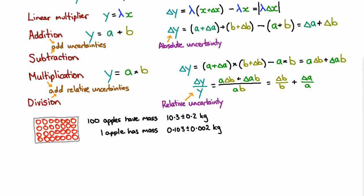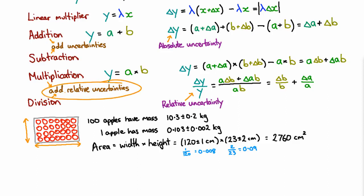Now suppose we wanted to know how much area the box has on one side. And we measured its height and its width. It's easy enough to get the average area. We simply multiply our width by our height. But what do we do for the uncertainty? Remember, we have to add the relative uncertainty. So the relative uncertainty in this quantity is 1 centimeter divided by 120 centimeters, which is 0.8%. And the relative uncertainty in this is 2 centimeters divided by 23 centimeters, which is 9%.